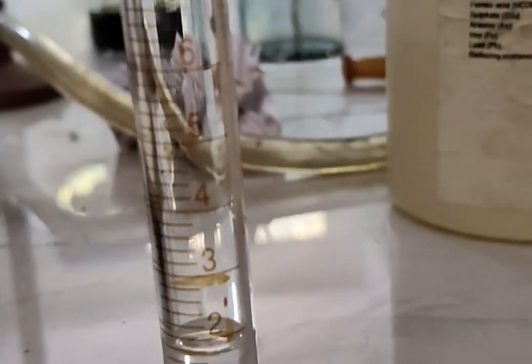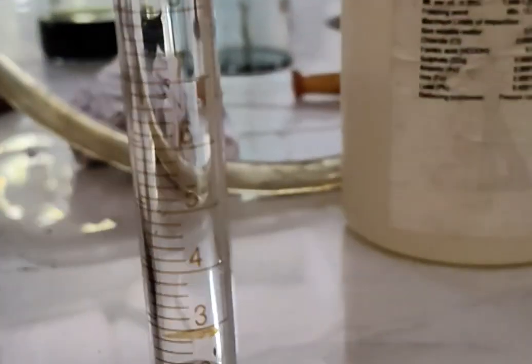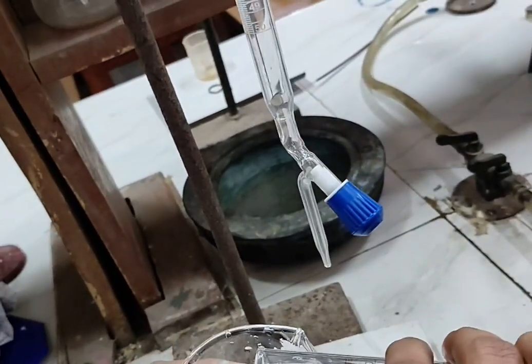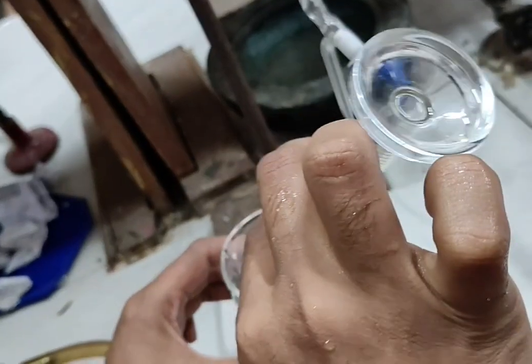Now we are making 1 ml of acetic acid solution with the help of distilled water in this beaker. This is the acetic acid solution that we have prepared.